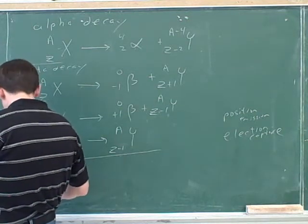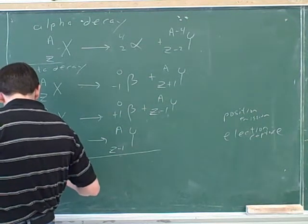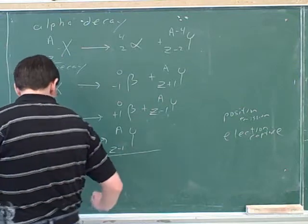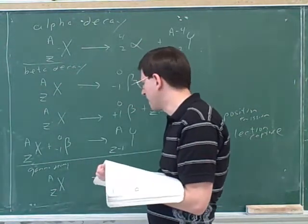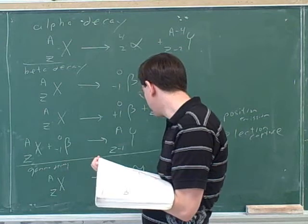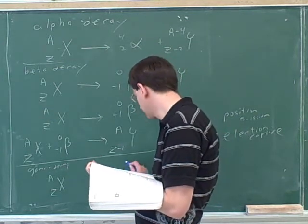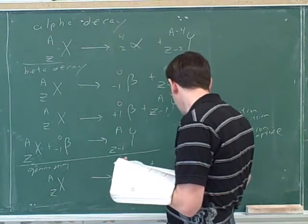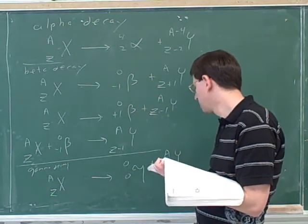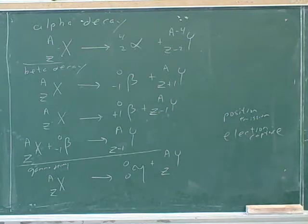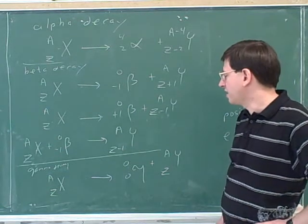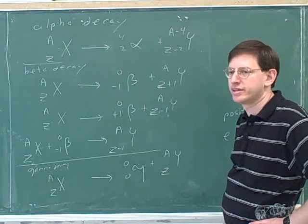And lastly, we have gamma decay where we're emitting a gamma particle. So would the gamma particle be a starting material or a product? A product. What are the numbers for a gamma particle? 0 and 0. So what would be the numbers for the daughter nucleus? A and Z. Good, because Z plus 0 is Z and A plus 0 is A. But in that case, are the daughter nucleus and the parent nucleus the same element or different elements? The same.